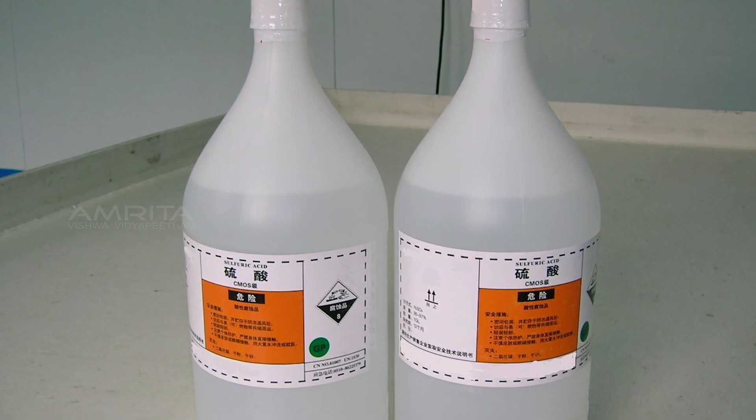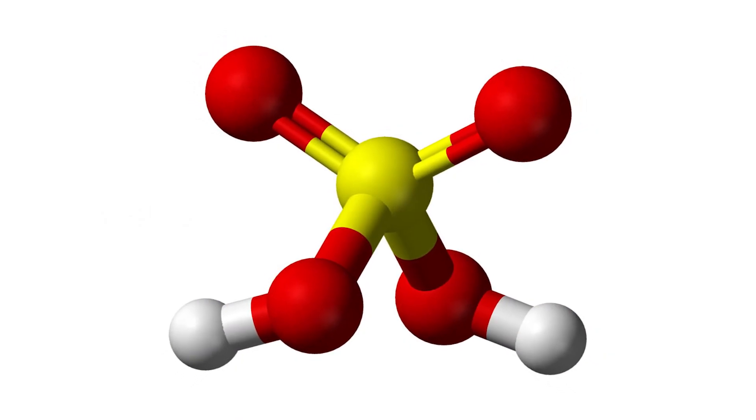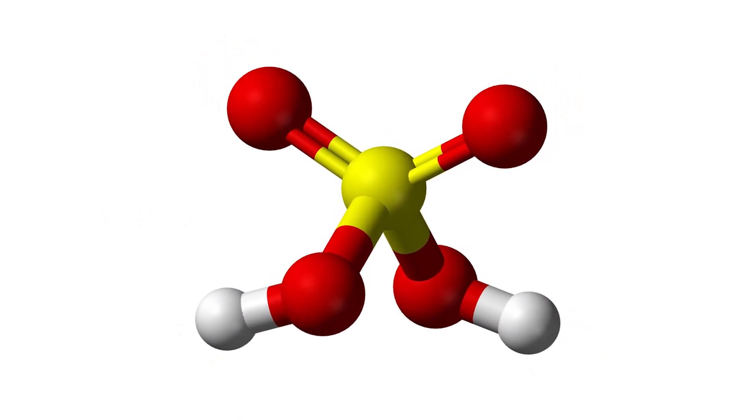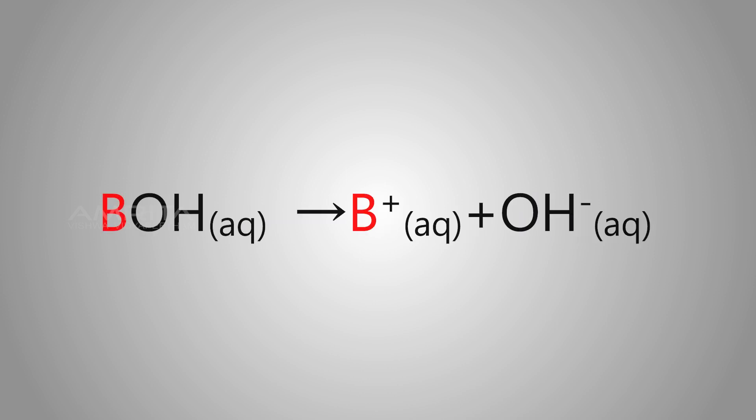According to the Arrhenius concept of acids and bases, an acid is a substance which releases one or more H+ ions in aqueous solution, whereas a base is a substance which releases one or more OH- ions in aqueous solution.